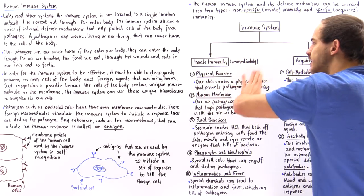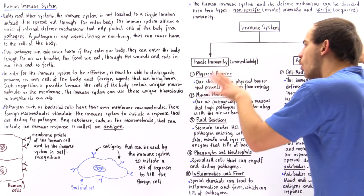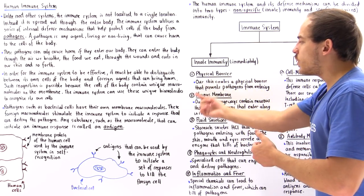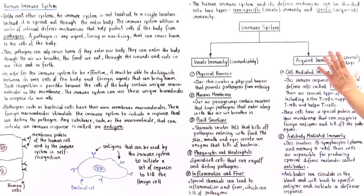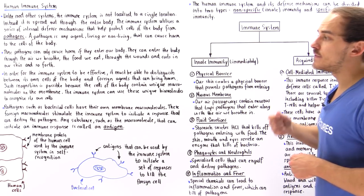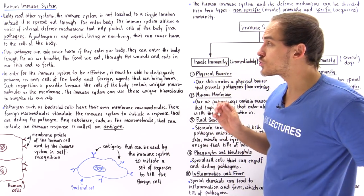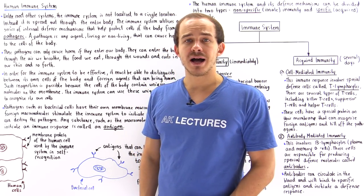Innate immunity is not learned by the body — we are essentially born with this type of immunity because we are born with skin, mucous membranes, and so forth. Acquired immunity, on the other hand, is the type of system that utilizes different specialized cells that carry out specific functions and kill off specific types of pathogens that enter our body.